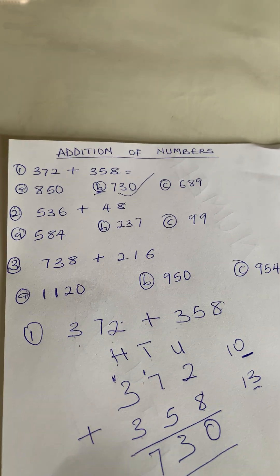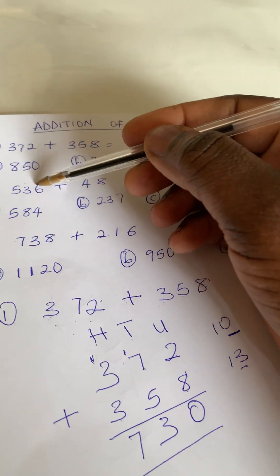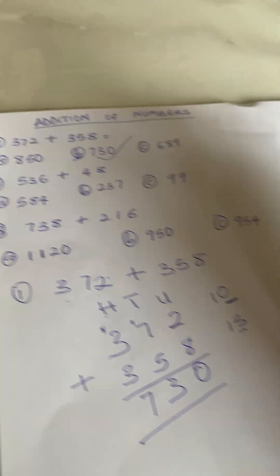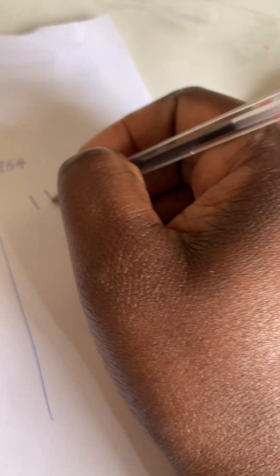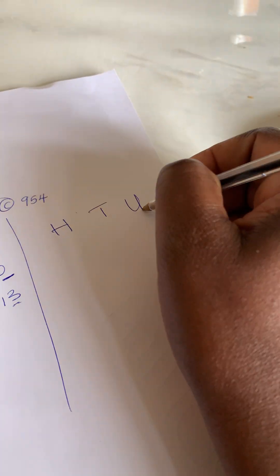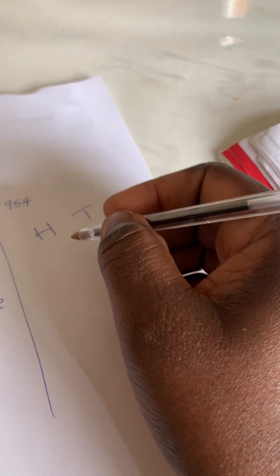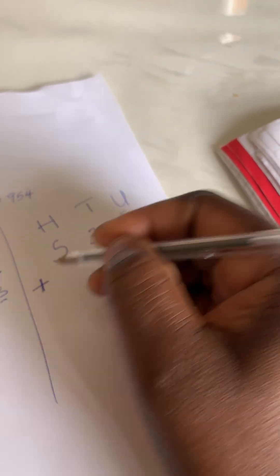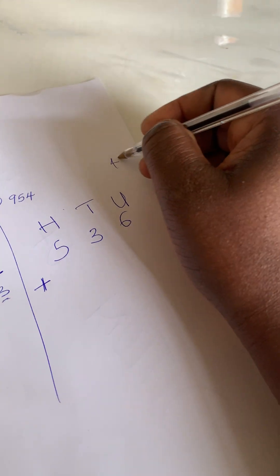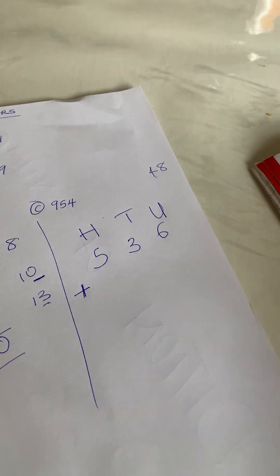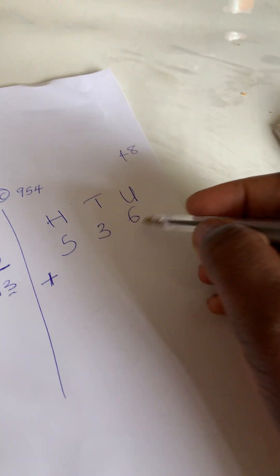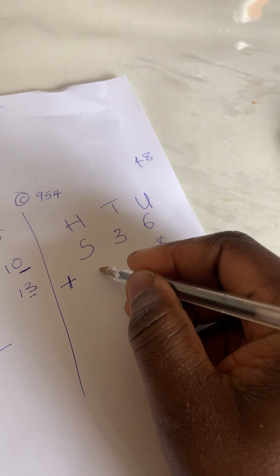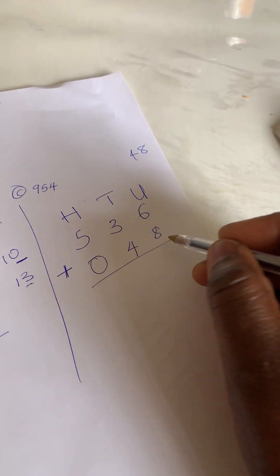The second one: we have 536 plus 48. We still have our hundreds, tens, and units. Write 536 plus 48. Always start from your right-hand side. We have 8 first, then 4 here. There's nothing, so we can just add zero. Then you draw your line.